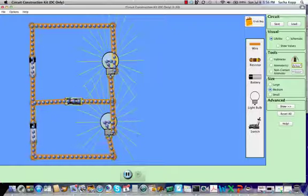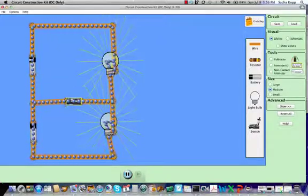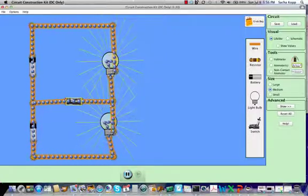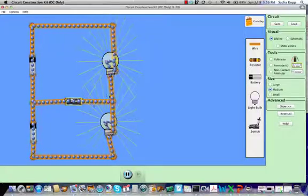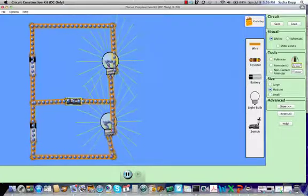I'm going to close the switch though and see what happens. Well notice the current flow continues to go around the outer perimeter and nothing happens in the middle. It's for the reason I just said that really there's no potential drop from this point to this point in the circuit therefore there's no current flow through here.